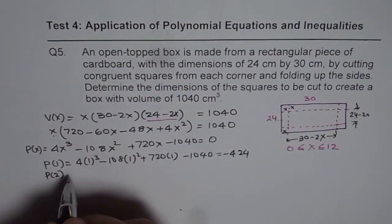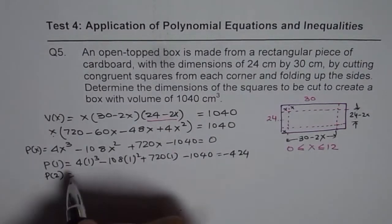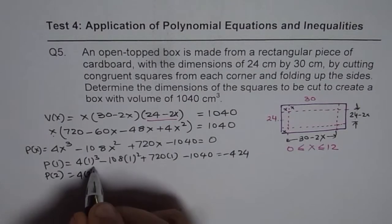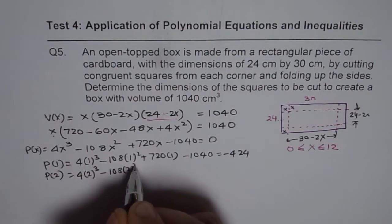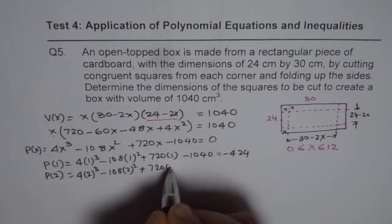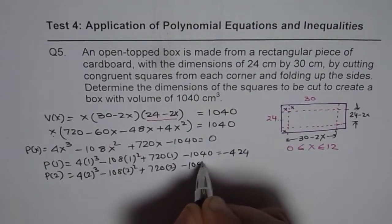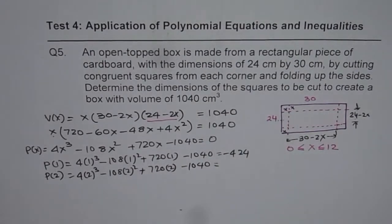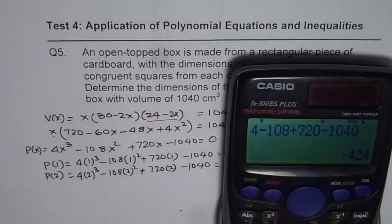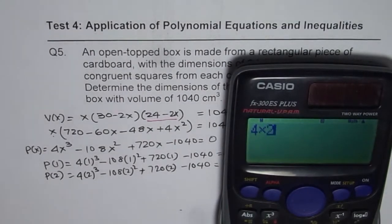So, let us try for p of 2. So, p of 2 will be 4 times 2 cube minus 108 times 2 square plus 720 times 2 minus 1040. So, let us see what that is.